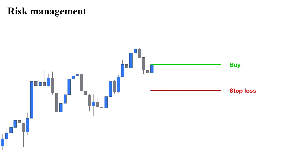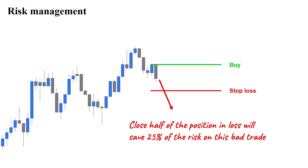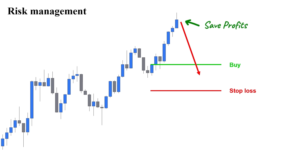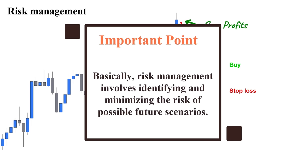How does risk management help us in this trading example? Imagine after buying this pair, the price goes against our predictions. After this break and close to the downside, we can expect the price to fall and possibly hit our stop. Although the price has not hit our stop, if we close half of our position in the loss, we can save 25% of our risk amount in this bad trade. On the contrary, if the market goes along with our predictions, there is a possibility for the price to reverse and make us lose a winning trade. So saving some of our profits before reaching our final targets is another risk management technique. Basically, risk management involves identifying and minimizing the risk of possible future scenarios.